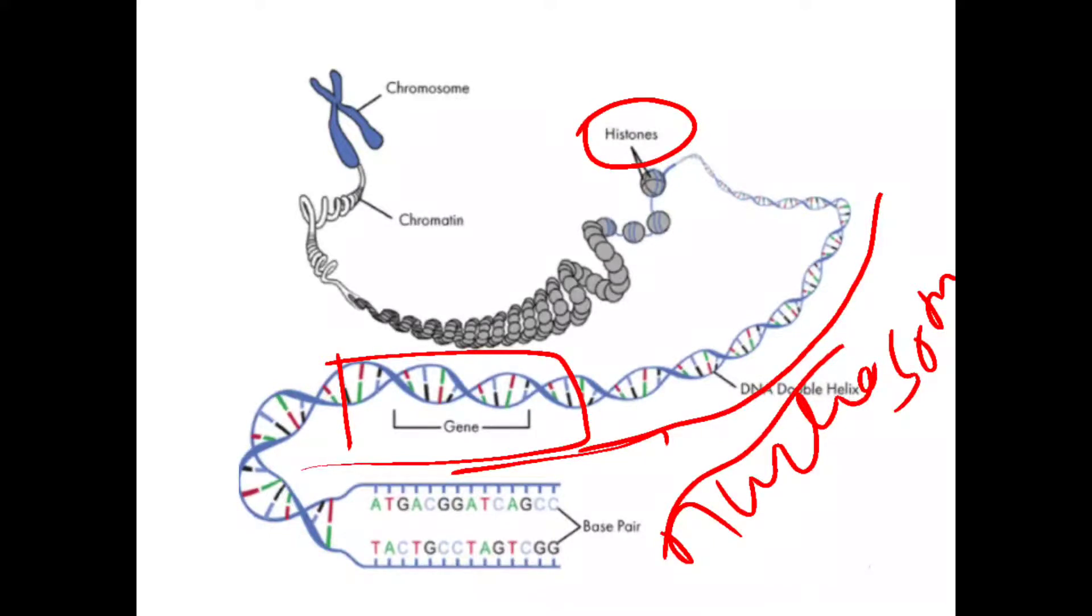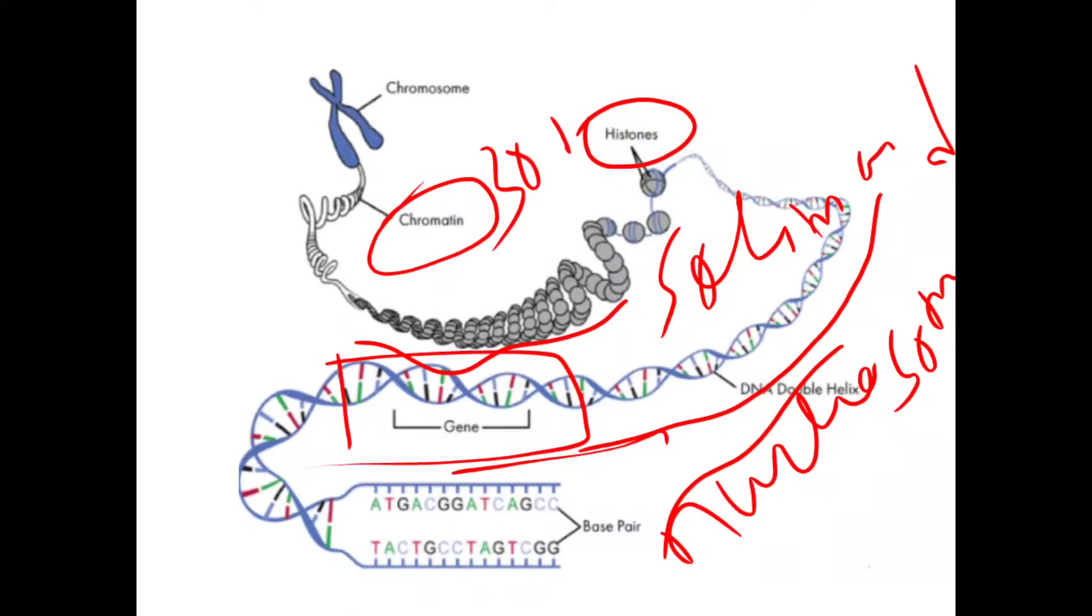The nucleosomes then condense further to form a structure called solenoid. This is the solenoid structure. Now when the solenoid structure condenses further, it forms chromatin. The diameter of the chromatin is about 30 nanometers.